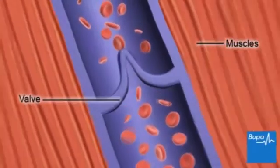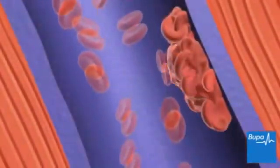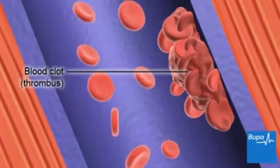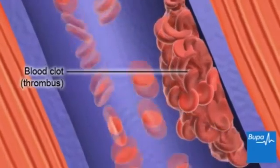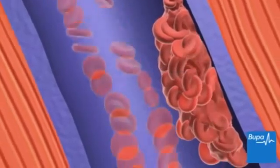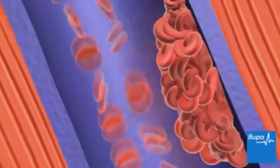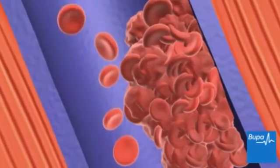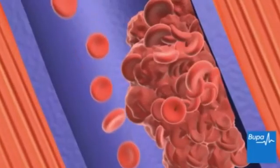DVT is where a blood clot or thrombus forms in a deep vein, partly or completely blocking the flow of blood through the vein. A blood clot can form if a vein is damaged, if the flow of blood in the vein slows down, or if the blood has a higher than normal tendency to clot. Here we show the blood clot forming in the vein.